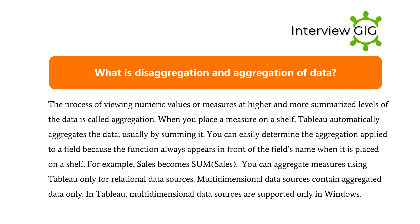What is aggregation and disaggregation of data? The process of viewing numeric values or measures at higher and more summarized levels of the data is called aggregation. When you place a measure on a shelf, Tableau automatically aggregates the data, usually by summing it. You can easily determine the aggregation applied to a field because the function always appears in front of the field's name when it is placed on a shelf — for example, sales becomes SUM. You can aggregate measures using Tableau only for relational data sources. Multidimensional data sources contain aggregated data only, and in Tableau, multidimensional data sources are supported only in Windows.